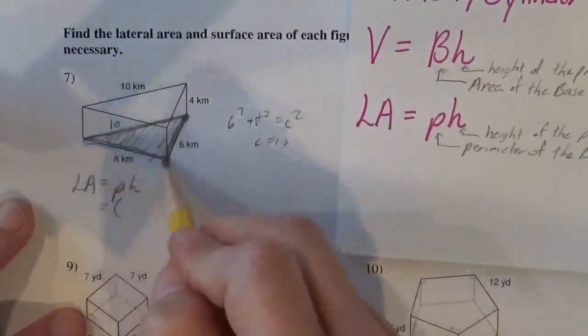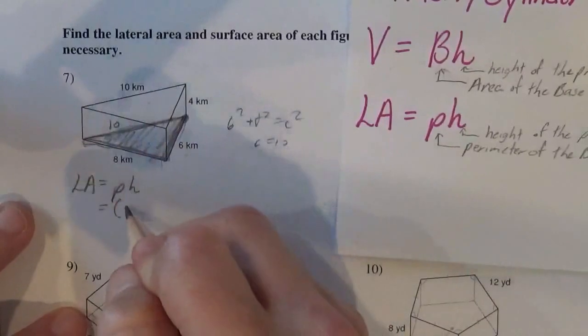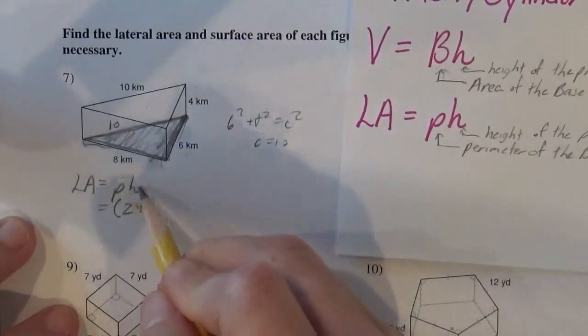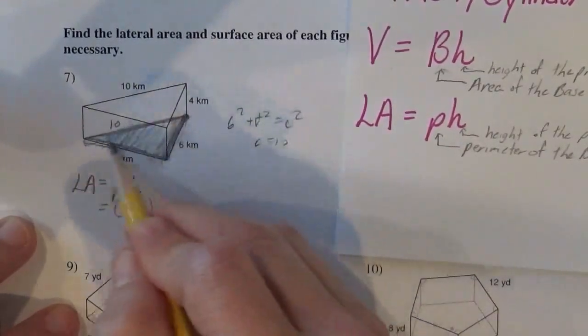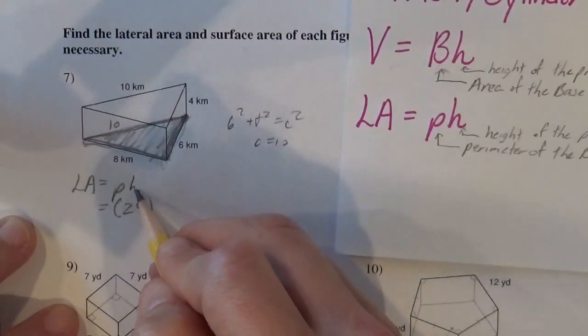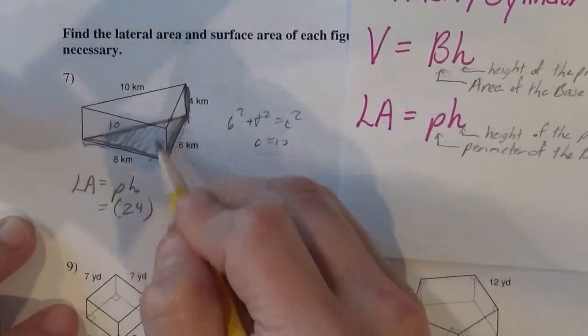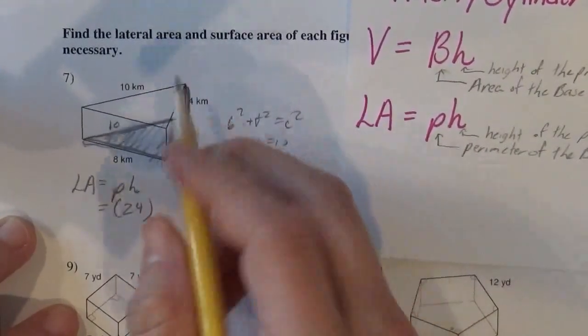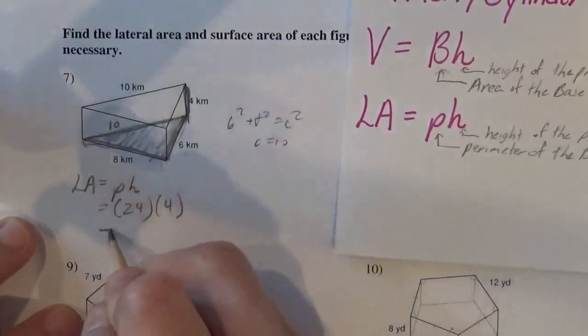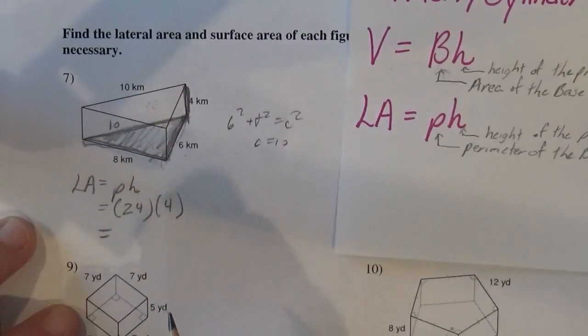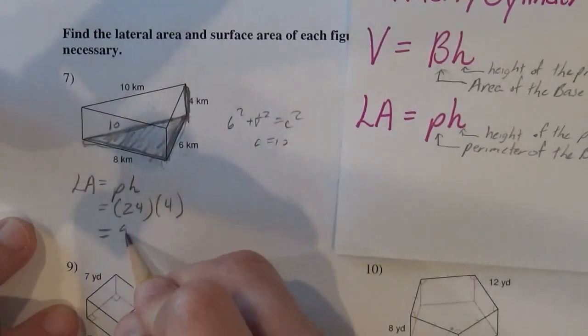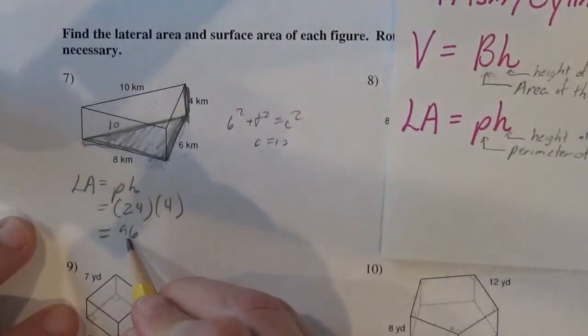And when you add those all up to get the perimeter: 18, 24. So 24 for the perimeter of the base. And then you need times the height of the entire prism. So the height is what connects the two bases. This base and that base are connected with the height of 4. So I need 24 times 4, and that gives me 96. So that's the lateral area.